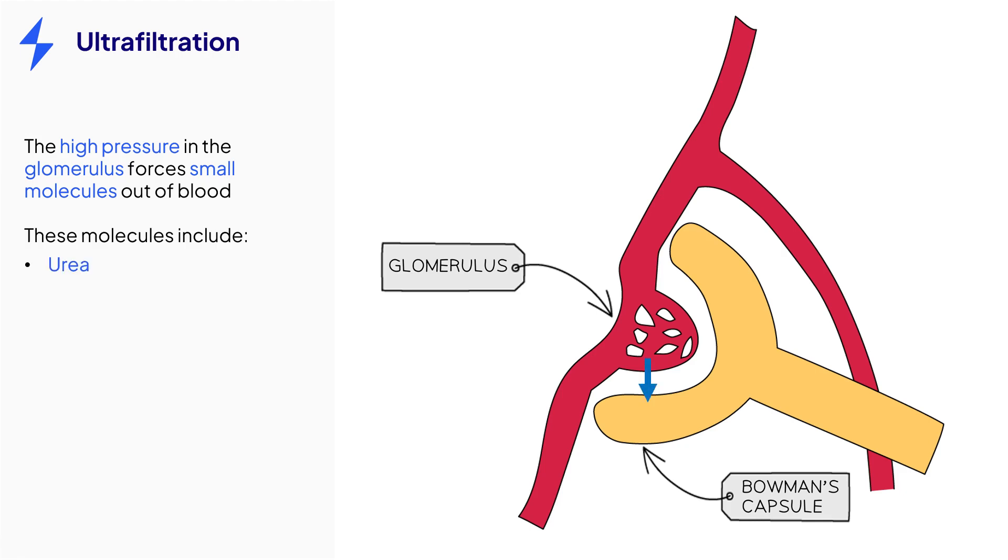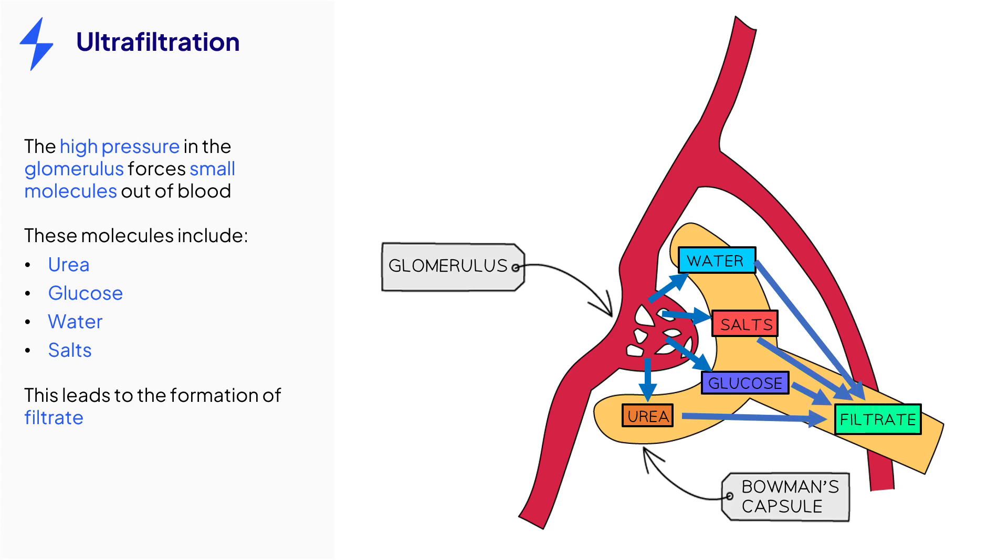Besides waste products like urea, there are substances such as glucose, water, and salts that are needed by the body and will be reabsorbed back into the bloodstream. Fluid that enters the proximal convoluted tubule is called filtrate, since it contains both useful and waste substances that were filtered out of the blood.